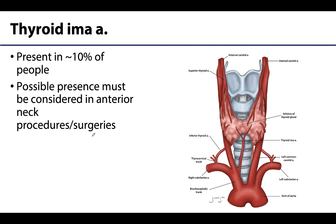In about 10% of people, there is a small unpaired artery that runs down the midline region associated with the trachea, branching from the brachiocephalic trunk. The possible presence of this artery must be considered when performing procedures in that midline region of the neck, such as a thyroidectomy or a tracheostomy.